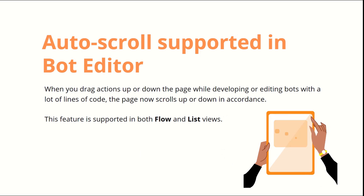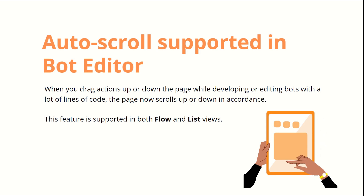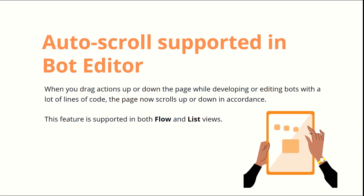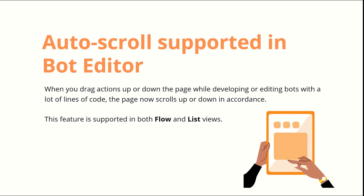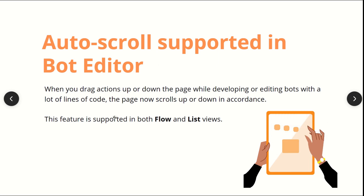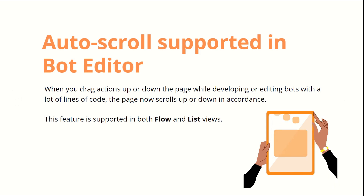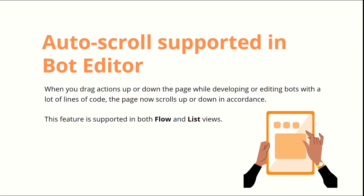Fifth is auto scroll support in the bot editor. When you drag and drop actions from the left pane of your bot editor, auto-scrolling was not happening before. Now, once you pick an action from the left pane and try to drop it in the editor window, there is an auto scroll functionality that has been enabled. You can drag it anywhere and move up and down with your mouse pressed. This feature is supported in both flow and list view.